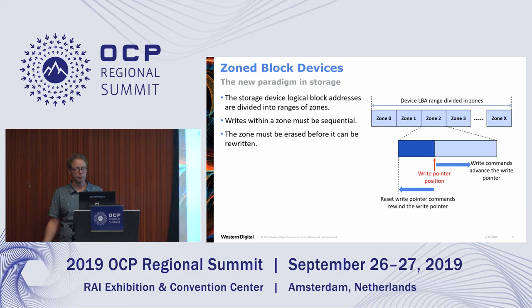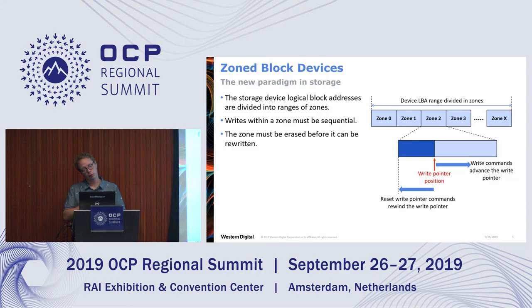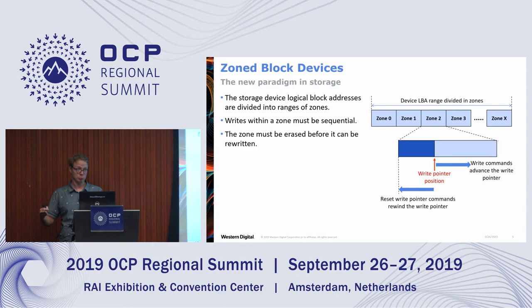If you want to start writing to a zone, you issue a write at the start of the zone and then push the write pointer forward by issuing sequential writes until the capacity is full. Once you have completed use of that data — through some copy-on-write mechanism, or by completely invalidating the whole file such as deleting it — you can reuse that block by simply resetting the write pointer to the start and rewriting that zone. This is a stricter contract, but it allows the host to have better control of the media.